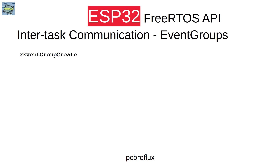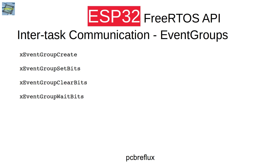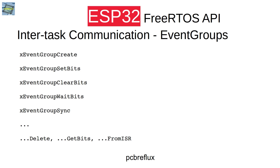Before going to the code example, I'll introduce the API calls. We have functions to create an event group, to set or clear the bits of an event group, and to wait for the setting of one or more bits. As mentioned in the second example, we can also use group synchronization. There are many more functions — for example, deleting the event group, getting bits without waiting, and ISR versions called from an interrupt.